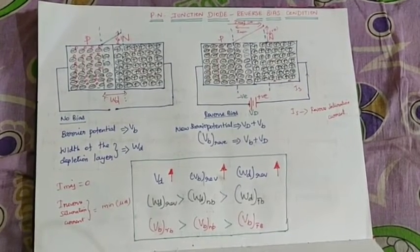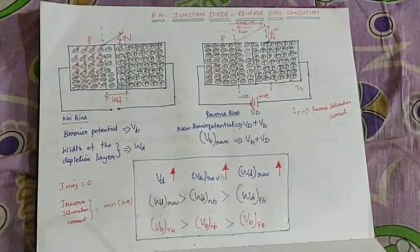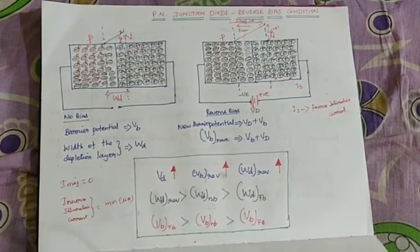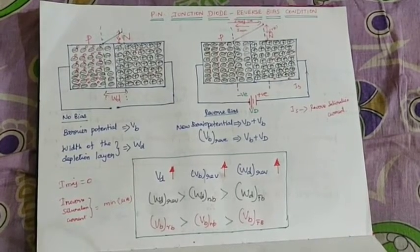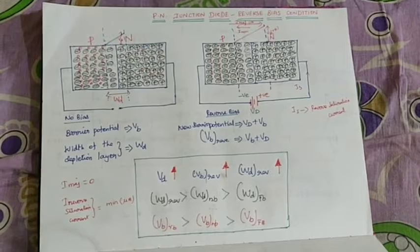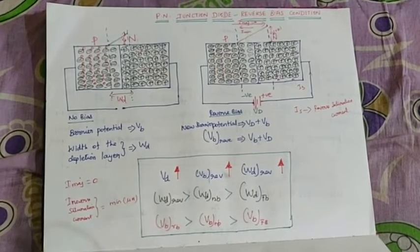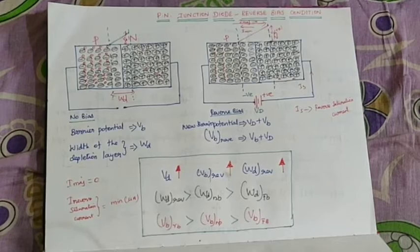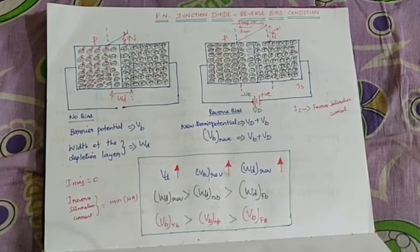This is the base — understanding the PN junction diode's operation. If you understand this operation, you can easily understand the transistor, MOSFET, and other transistor types, which are very basic for first year and second year students. If you have doubts, please watch this video again. A lot of thanks.